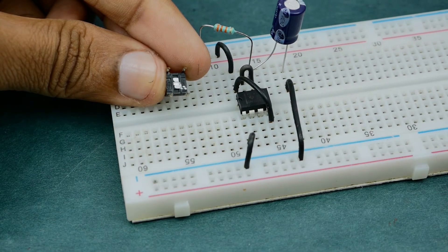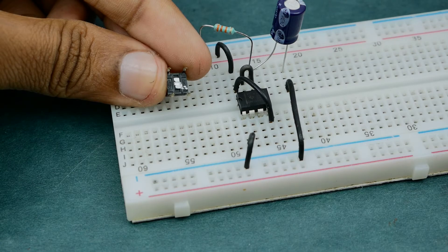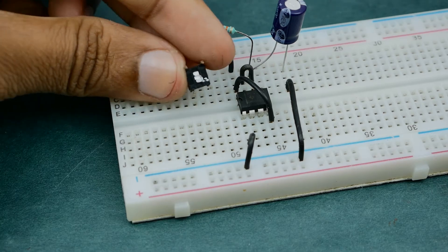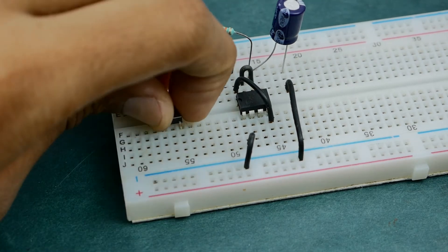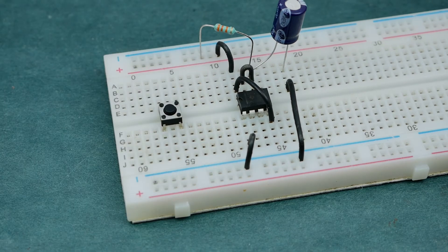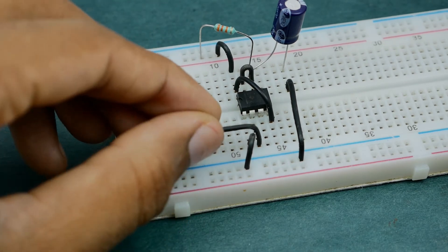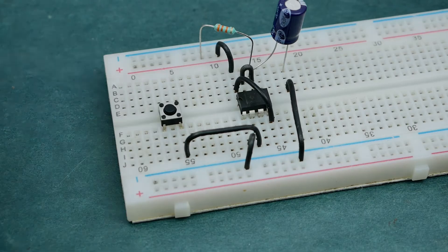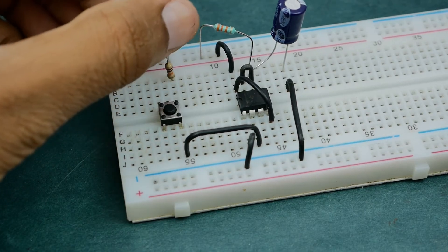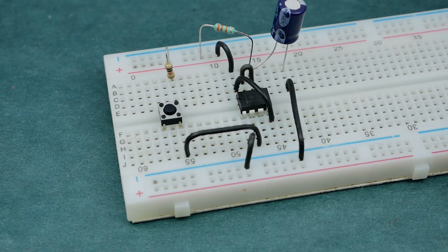Next take a momentary push button switch. It has 4 pins of which 2 pins are internally connected to each other and the other 2 to each other. We need to place the interconnected pins in a vertical direction. Now connect pin 2 of the 555 timer IC to the push button switch and connect the other interconnected pin to positive rail via 10k resistor.